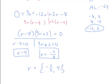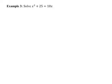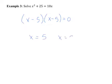Example three — work on your own. When we factor this, we end up getting (x minus 5)(x minus 5). When we get the same answer twice, it's called a double root. Your answer is going to look like this — you simply list five. There's only one answer in solution set form, but this is called a double root.